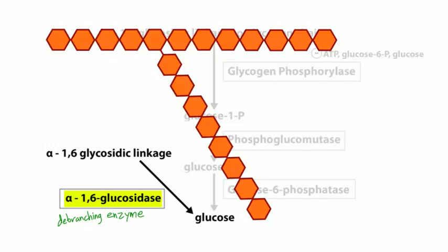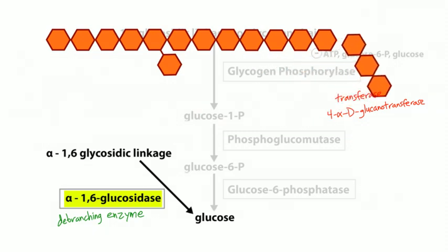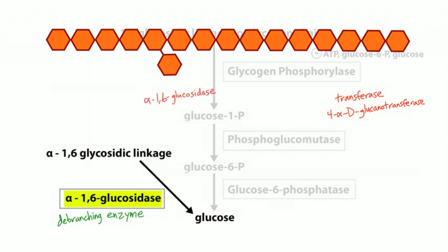Debranching enzyme has two functions. Glycogen phosphorylase breaks off glucose-1-phosphate molecules one at a time, but when it gets exactly four glucose molecules away from a branch point, it stops. That's when debranching enzyme goes to work. First, its transferase activity — 4-alpha-D-glucanotransferase — takes three of those last four glucose molecules and transfers them to another chain so glycogen phosphorylase can keep working. Second, its alpha-1,6-glucosidase activity removes that last glucose molecule at the branch point.